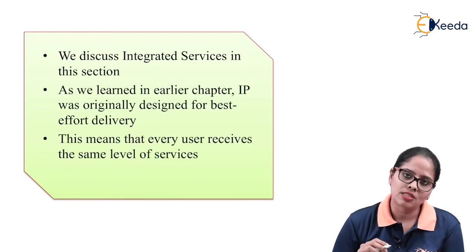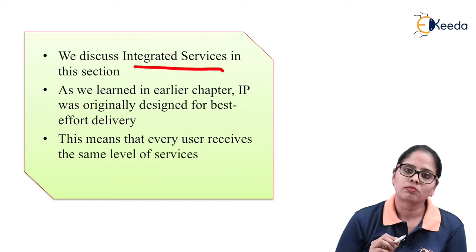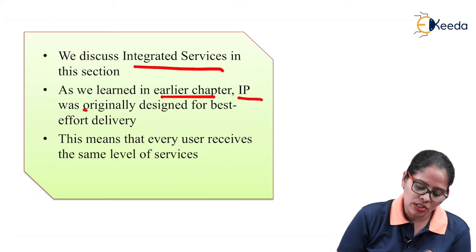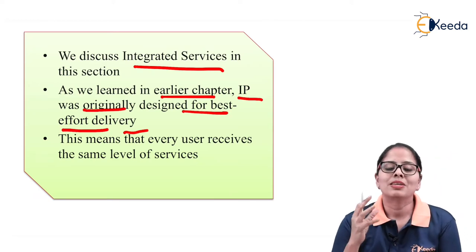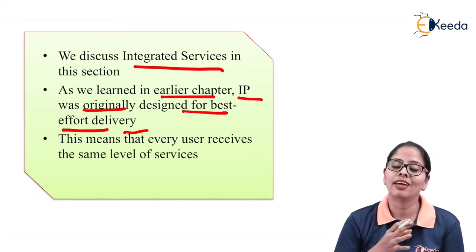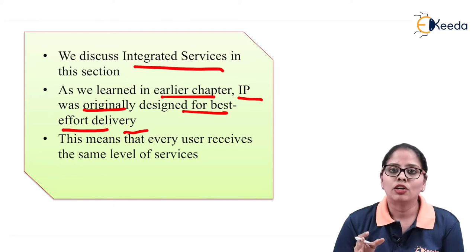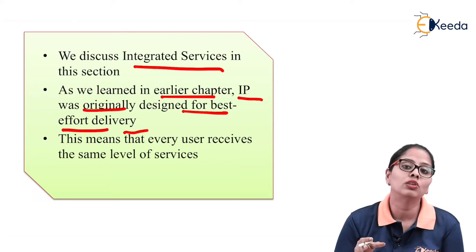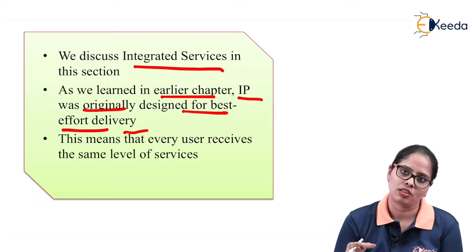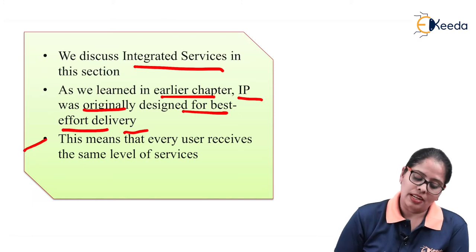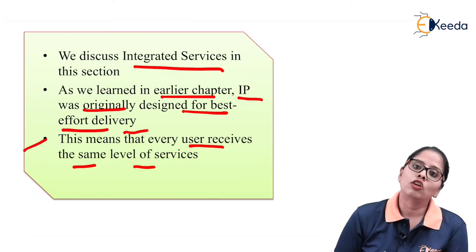In this section we are going to discuss about integrated services. As we learned in an earlier chapter, IP was originally designed to be best-effort delivery. The IP protocol's best-effort delivery means it does not provide any error correction, congestion control, congestion avoidance, or flow control. Whatever packet you are sending from the sender, it does not give you any guarantee that the packet will reach the destination. This means every user receives the same level of service.